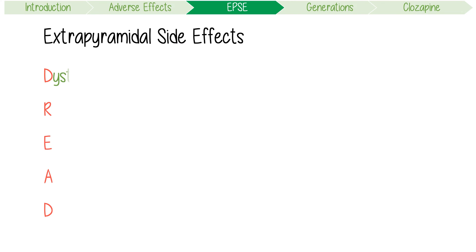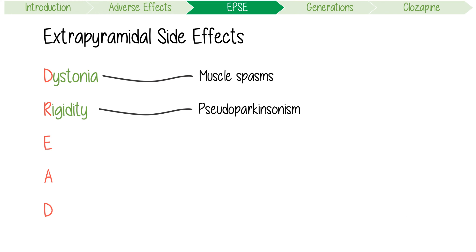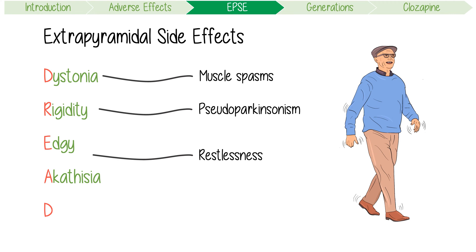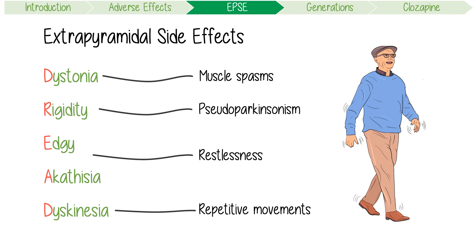DREAD stands for: acute dystonia, which is a painful abrupt reaction causing muscle spasms like torticollis; rigidity or pseudoparkinsonism, which presents with stiffness, tremor, and bradykinesia; edgy akathisia, which describes an inner sense of restlessness with an urge to move about; and finally tardive dyskinesia, which causes involuntary repetitive movements of the face like lip smacking. Don't forget, this one can be a permanent side effect.